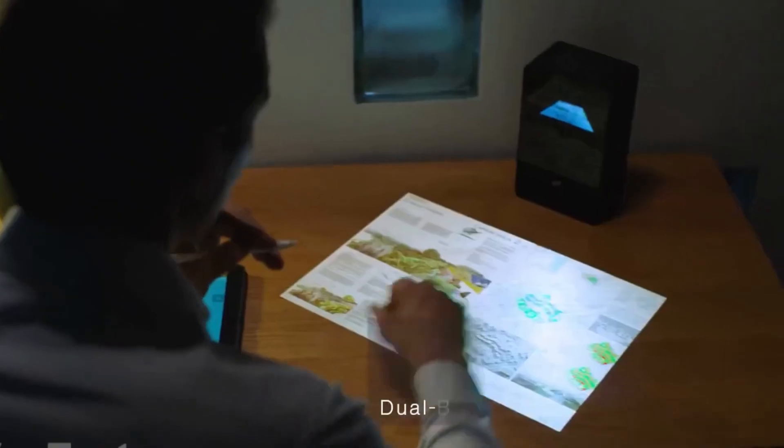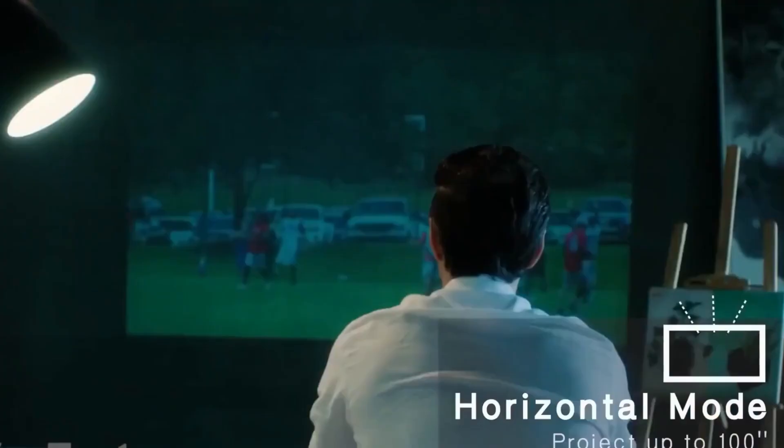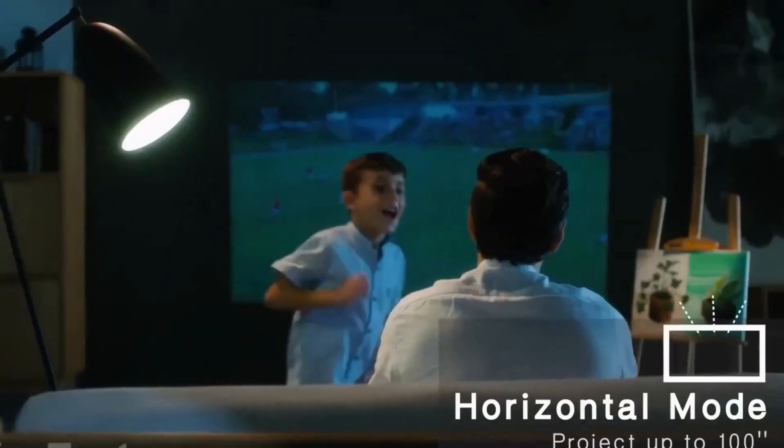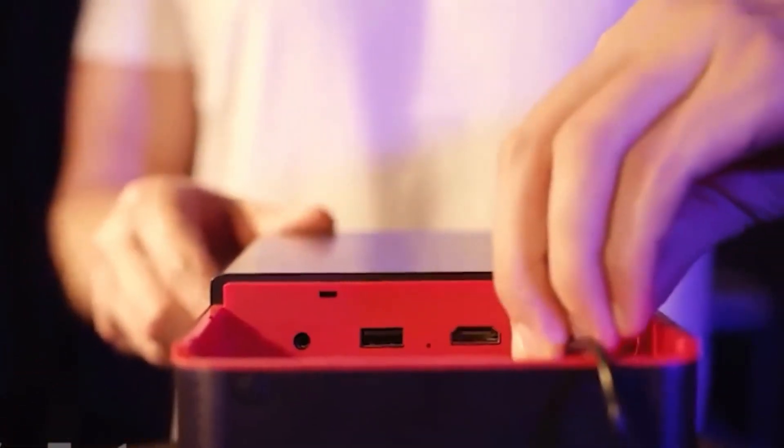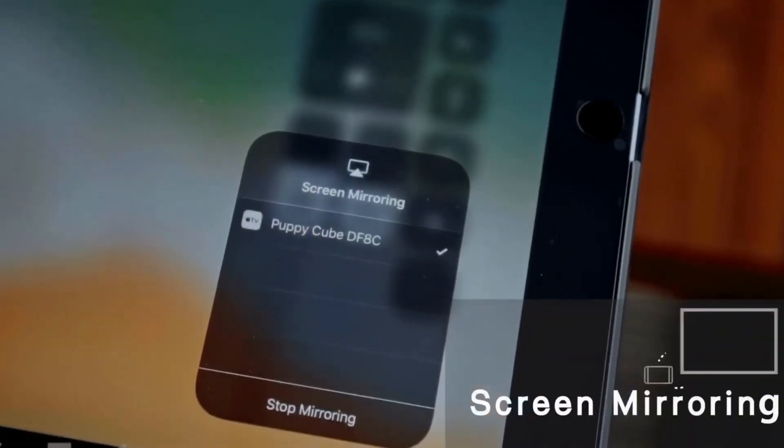On top of that, with the horizontal mode you'll get a 100-inch projection on your wall that can replace your TV. With the HDMI and USB support, you're free to plug in your laptop, tablet, or even a gaming console. Wireless screen mirroring is also an option.